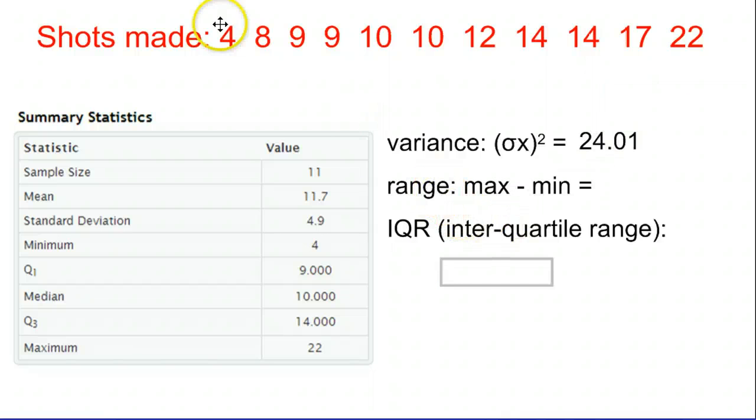The range is the highest to the lowest. The range is how far apart is the highest and lowest number, or the maximum minus the minimum. So if you take the max of 22, subtract 4. Hopefully you don't need your calculator for that. That's going to be 18.